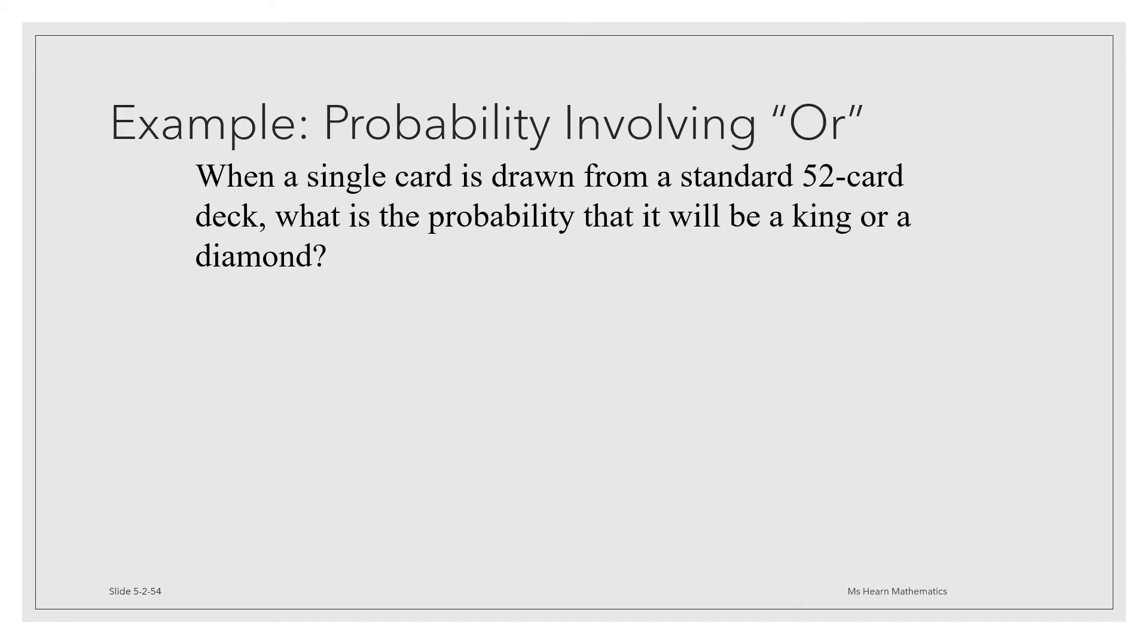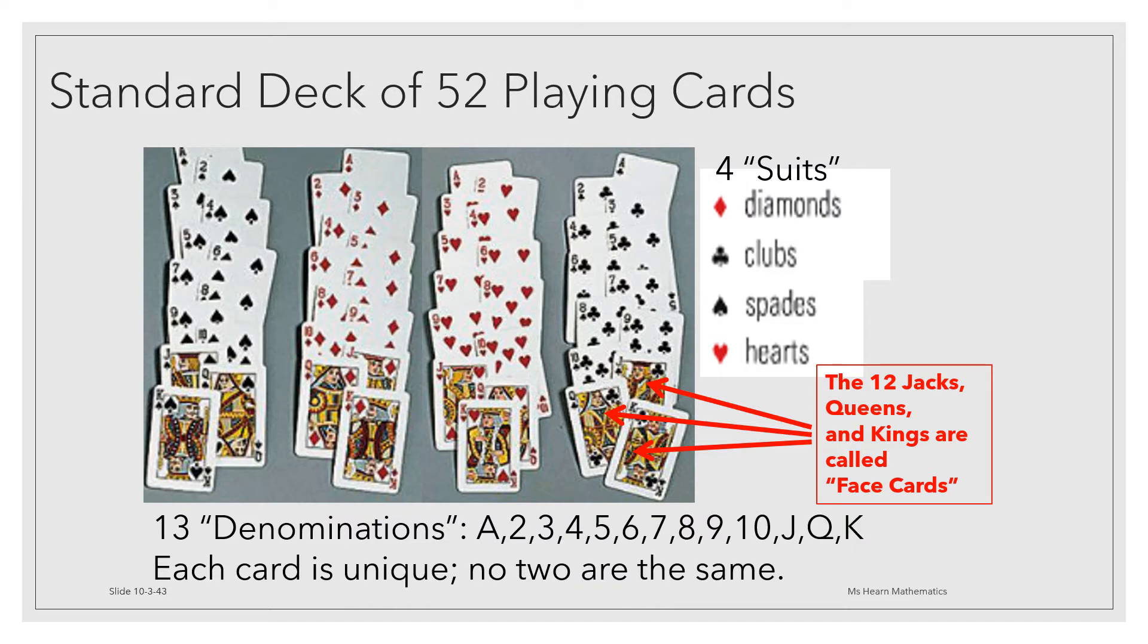So let's apply this idea to an example. When a single card is drawn from a standard 52 card deck, what's the probability that it will be a king or a diamond? Remember that in a standard deck of 52 playing cards there are four kings, one of each suit, and there are 13 diamonds. The ace of diamonds, the two of diamonds, 3, 4, 5, 6, 7, 8, 9,